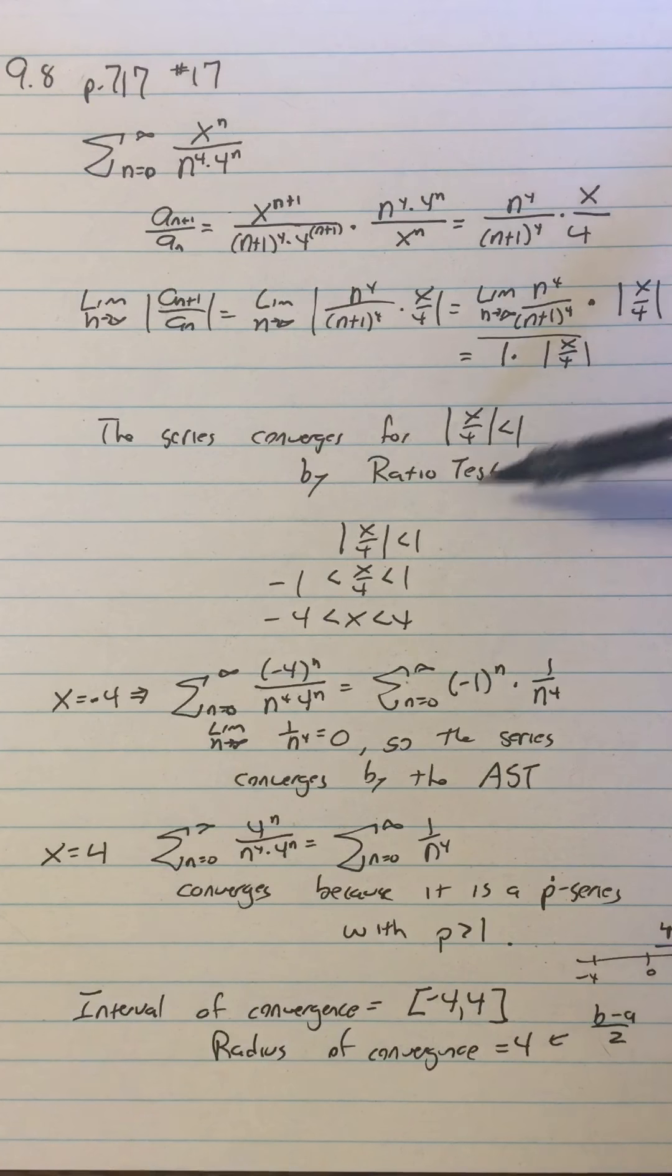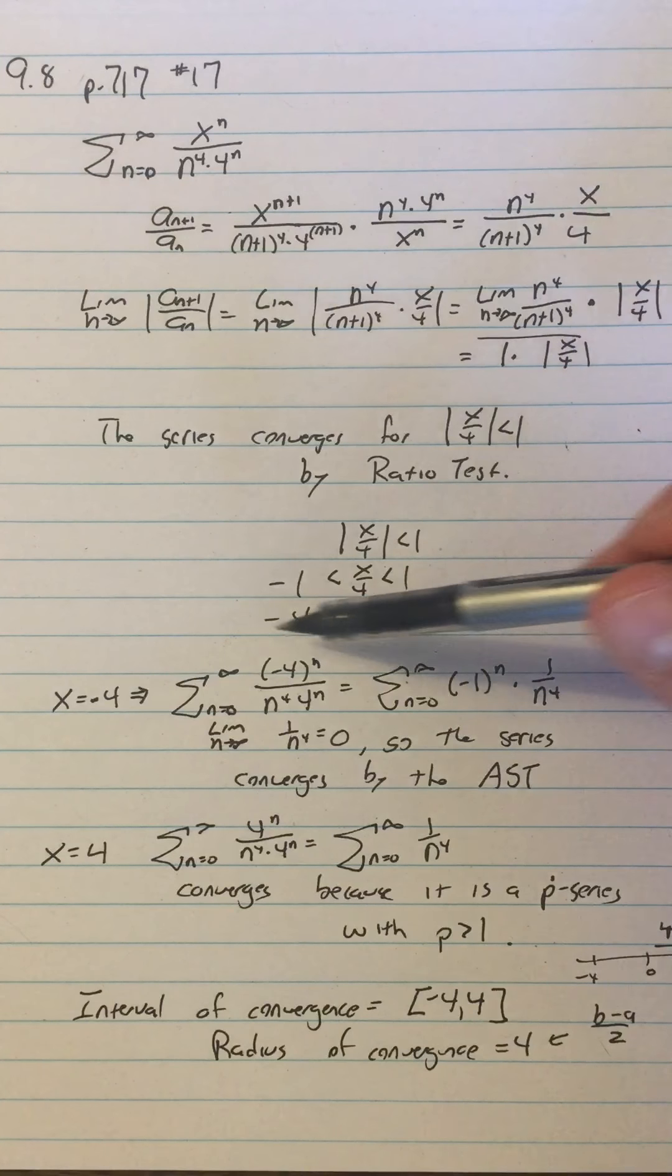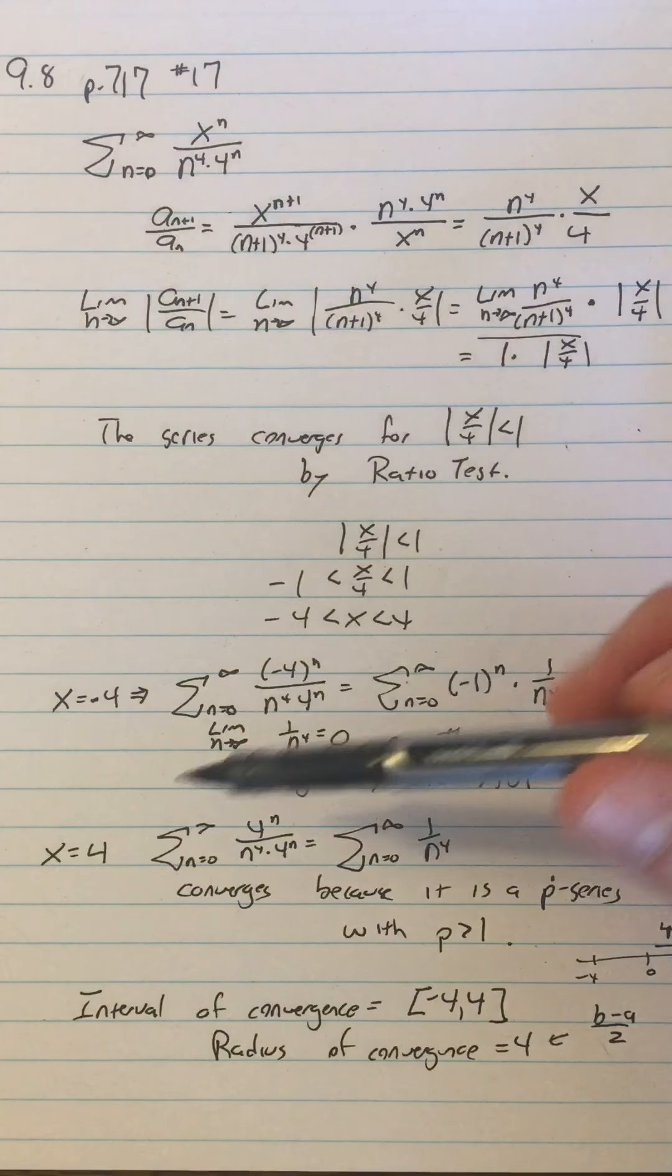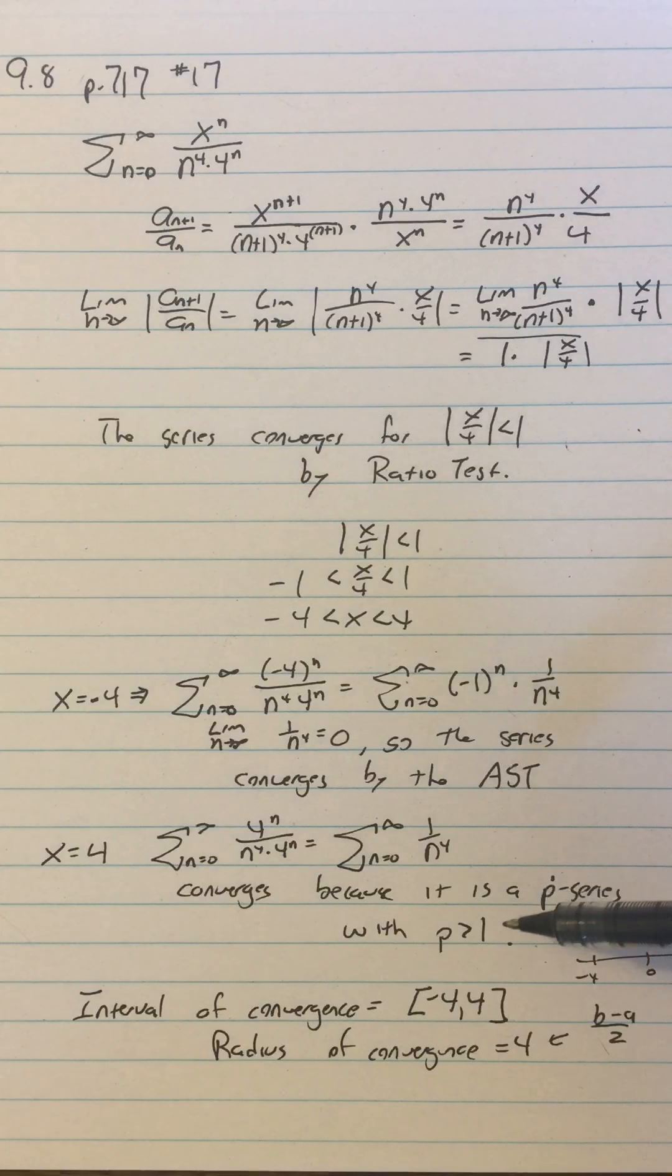You're going to start with ratio test. You're going to set up an inequality. You're going to solve the inequality. You're going to look at the inequality is always, as we say, strictly less than.